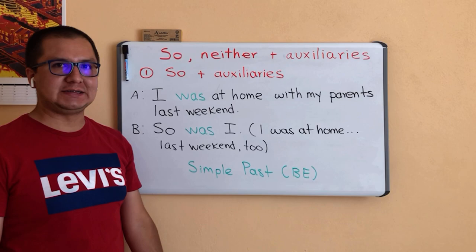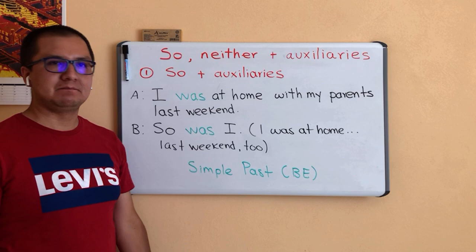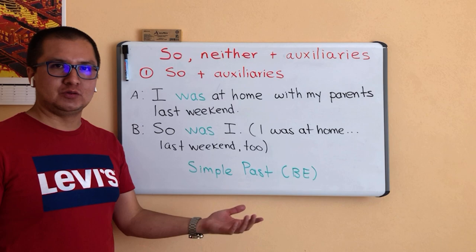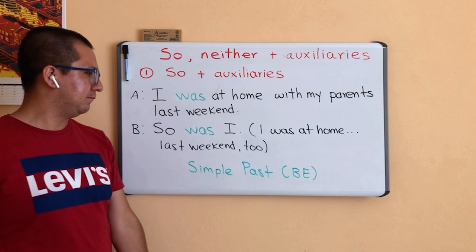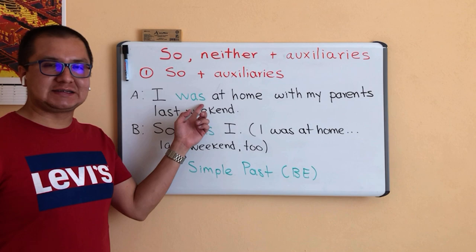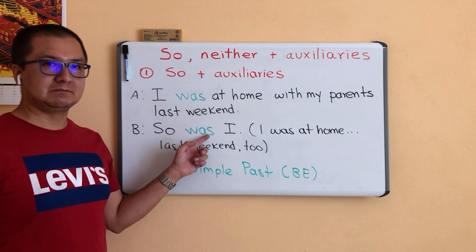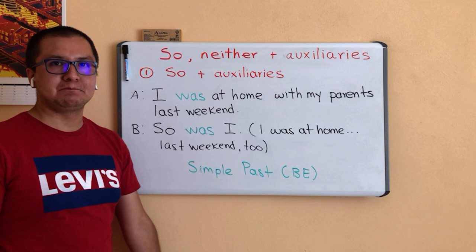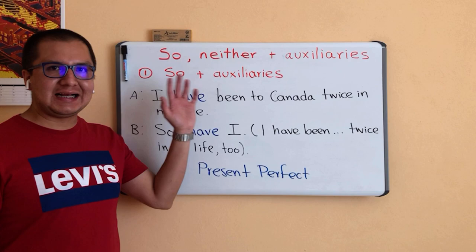Here is another example. Person A says: 'I was at home with my parents last weekend.' And person B says: 'So was I,' meaning: I was at home with my parents last weekend too. Person B has the same opinion as person A and agrees with them. Look at the word 'was' in green — simple past, verb BE. And look at the auxiliary WAS — WAS is the auxiliary for simple past in this case. Person B responds to an affirmative sentence.